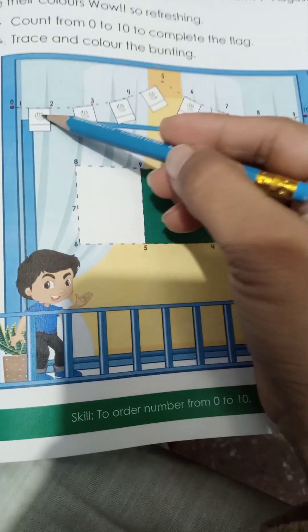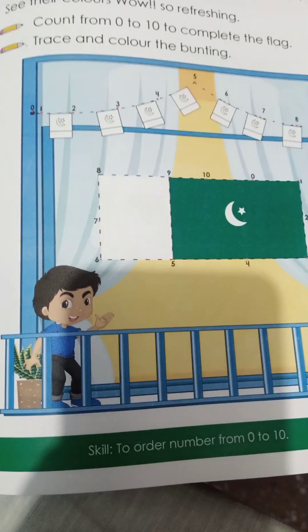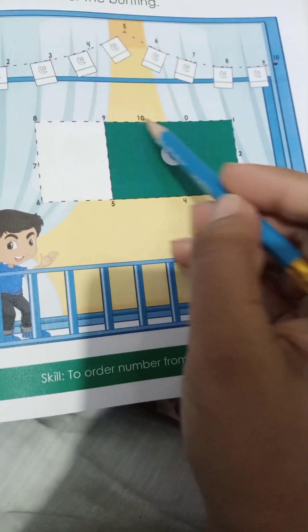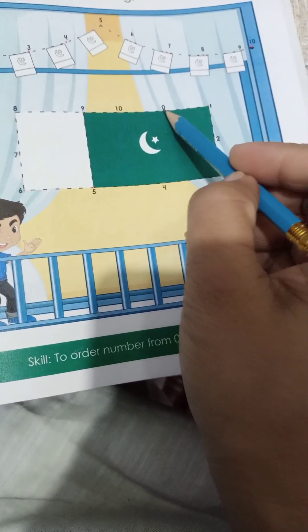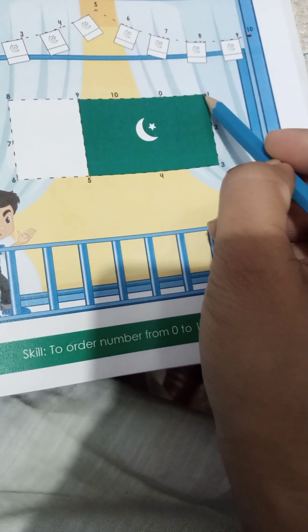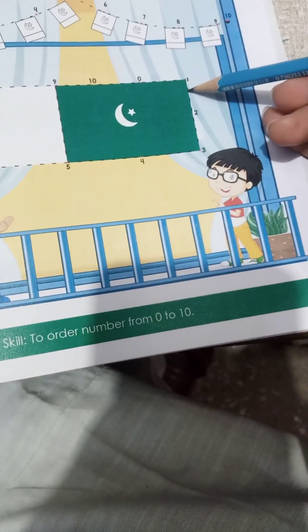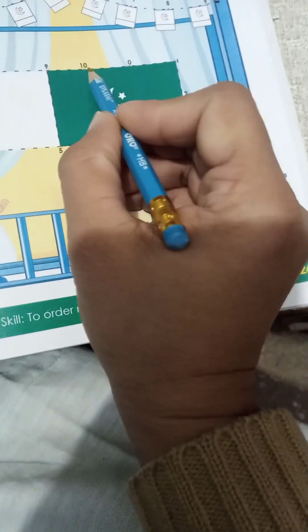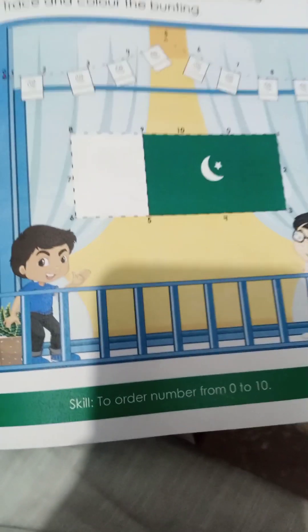Then color the flags. Which color are you all doing it? Green color. Then trace this flag starting from 0. Place the pencil on a dot, starting from 0, then come towards 1, 2. Trace it neatly and nicely, everyone. 2, 3, 4, 5, 6, 7, 8, 9 and 10. Then trace this 10 to 0 number to complete the flag.